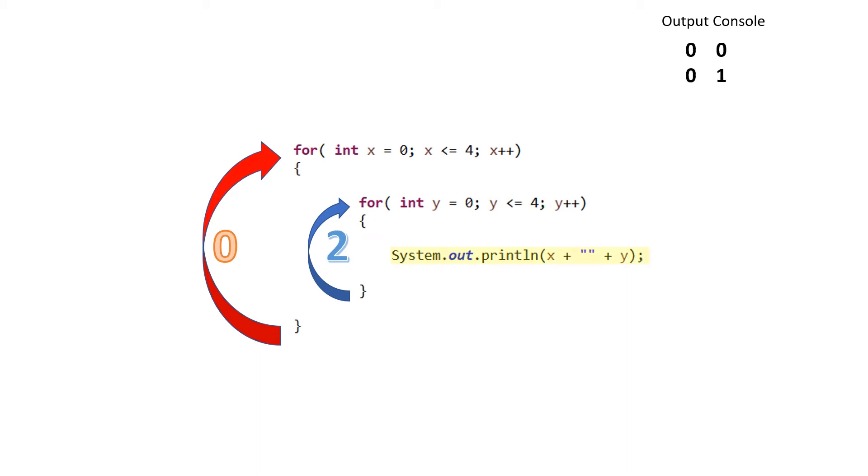This process continues to repeat itself with the value of y increasing by 1 each time the inner loop completes a cycle. After every cycle, the value of y is checked against the condition statement, is y less than or equal to 4. As long as the statement remains true, the cycle continues.